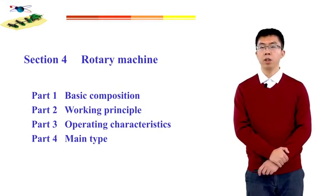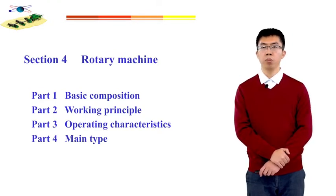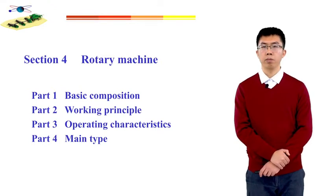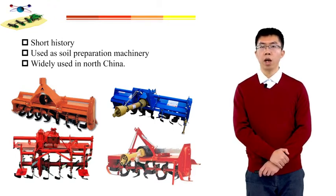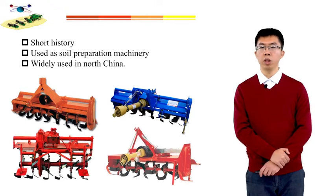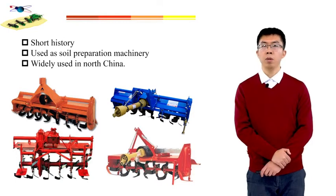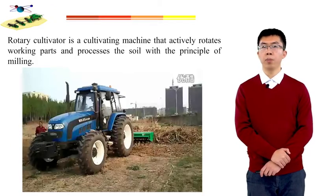After learning the moldboard plow and harrow, we will turn to the last tillage machine: the rotary tiller. In this part, the basic composition, working principle, operation characteristics, and the main types of rotary machine will be studied. Rotary tillers have a short history of application and have different uses — some countries use them as farmland machinery, some as soil preparation machinery, and most in China and surrounding areas use them for loosening soil and leveling ground after plowing. The amount of application in China is increasing year by year, especially in arid areas of the north.